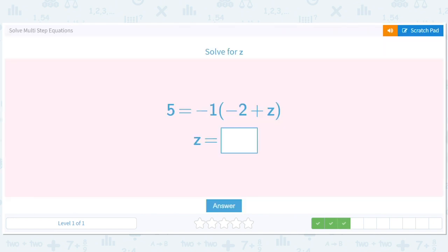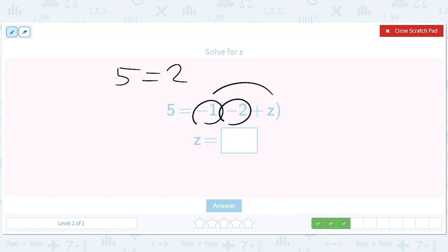So the first step here is to distribute the negative 1 in the right-hand side. So we'll get 5 equals, what's negative 1 times negative 2? Positive 2. And then what's negative 1 times z? Minus z.